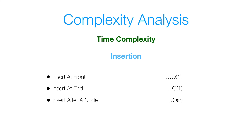Now let's move on to the time complexity for insertion. To insert a node at the front of a list is O(1) — constant time — because our front is just last.next. To insert a node at the end is also O(1) since we have a reference to the last node. However, to insert after a given node, we must traverse the entire circular linked list to find that node, making it an O(n) linear time operation.